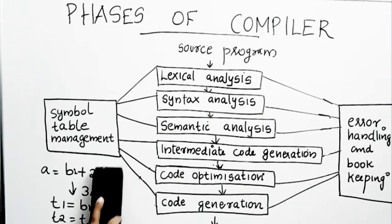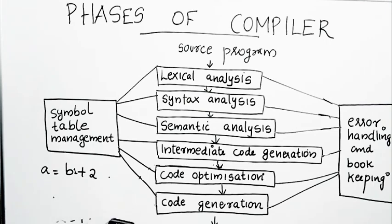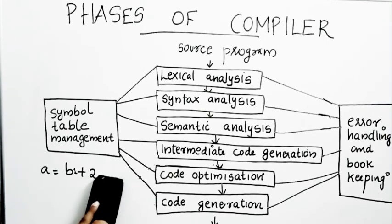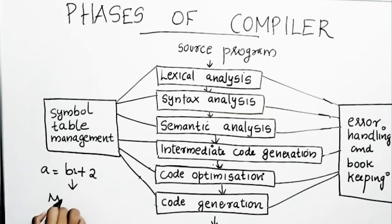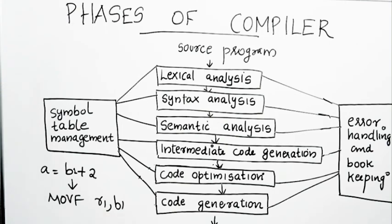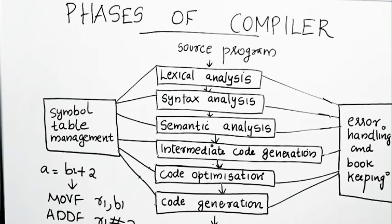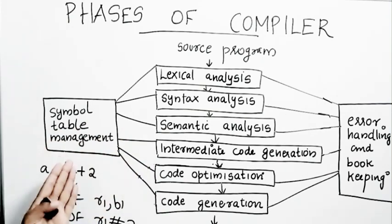Code generation assigns registers and memory locations for each and every variable in the program and generates suitable target code. For example: 'MOV R1, b1' moves the value of b1 into register R1; 'ADD R1, R1, 2' adds 2 to R1; then the result in R1 is copied to the memory location pointed to by 'a'. At the end, you get the target machine language code.